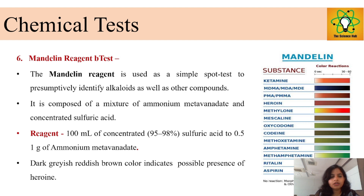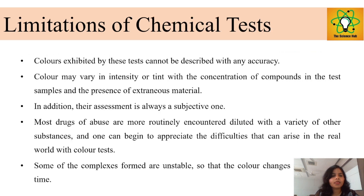The Mandelin test is also a spot test, composed of a mixture of ammonium metavanadate and concentrated H₂SO₄ — 100 mL of concentrated 95 to 98 percent sulfuric acid with 0.5 g of ammonium metavanadate. A dark grayish and reddish-brown color indicates the possible presence of heroin.